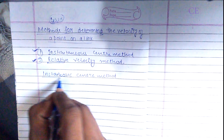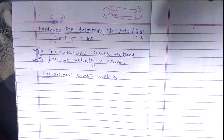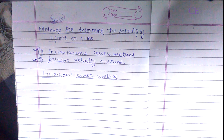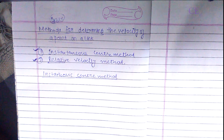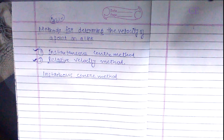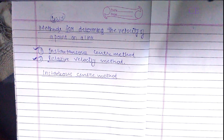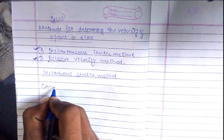The instantaneous center method is convenient and easy to apply in simple mechanisms. The relative velocity method is a little bit tough because we need to draw a configuration diagram for that. So what is the concept behind the instantaneous center method?